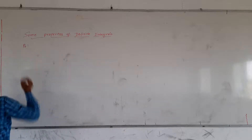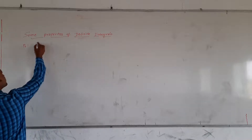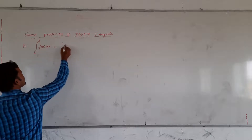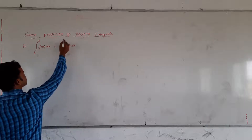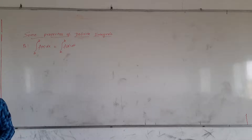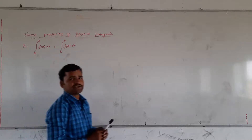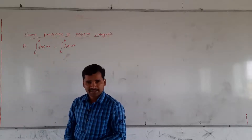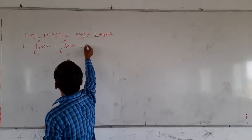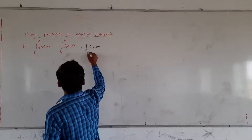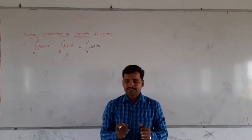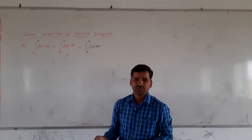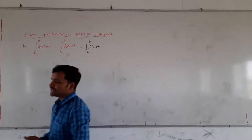P0 property says: integration of f(x) with respect to x from a to b is equal to integration of f(t) with respect to t from a to b. This means the variable can be changed. Here, the variable x is changed to t. In the same way, you can change it to any new variable — f(u) · du from a to b, whatever variable you want. This is about the P0 property.